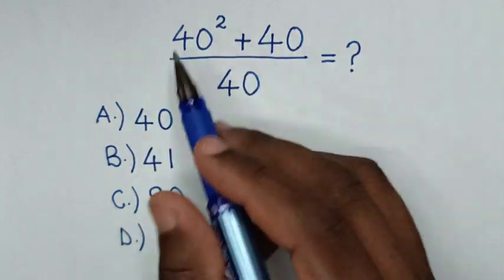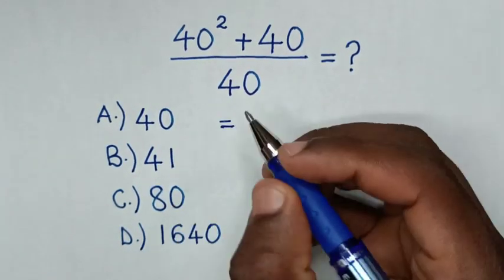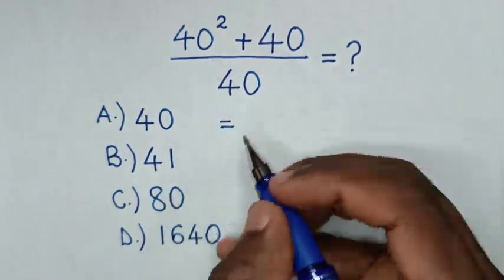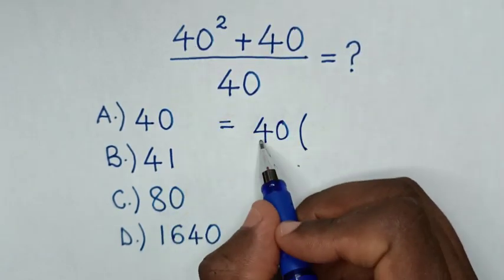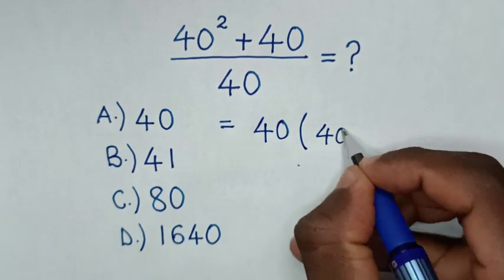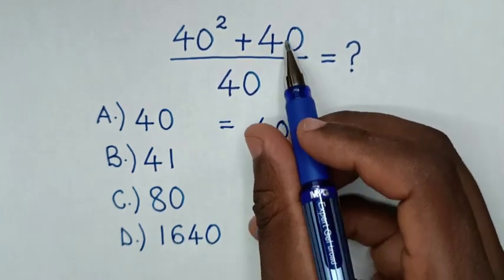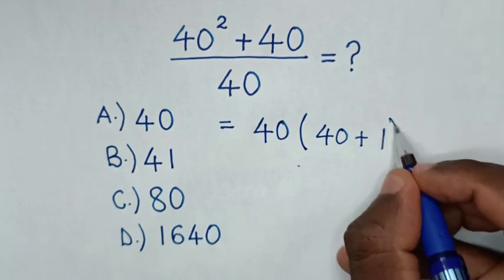So from this expression, it will be equal to, here in the numerator 40 is common. So we take 40 out of bracket, then 40 squared divided by 40 is 40, then plus 40 divided by 40 is 1 bracket.